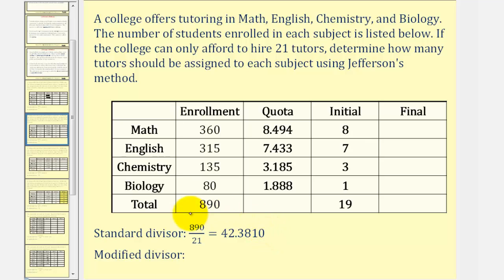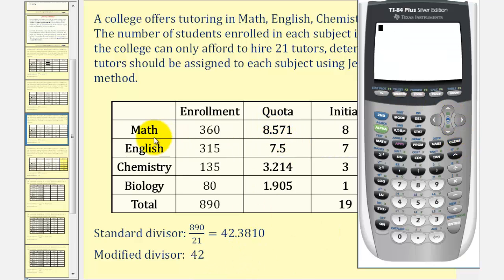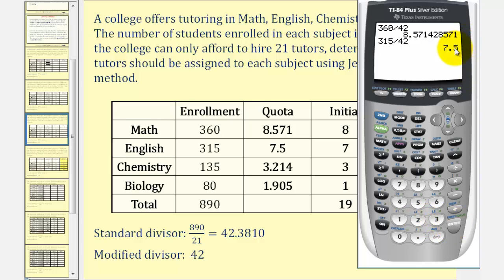So now we're going to reduce the standard divisor and recalculate these quotas until we find an initial apportionment that sums to 21. Let's reduce the divisor to 42 and recalculate. With a modified divisor of 42, we take the enrollment for each subject and divide by 42. For math, that's 360 divided by 42, which is approximately 8.571. For English, 315 divided by 42, which equals 7.5.